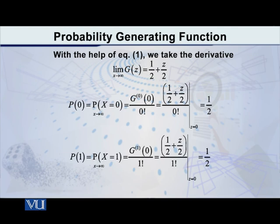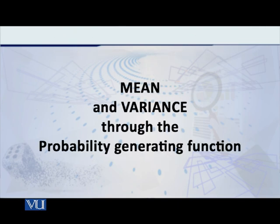Once again, you have seen that the probability of X equal to 1, which should be 1/2, comes out to be 1/2. This is a simple example to illustrate how you can generate probabilities from the probability generating function. After this, I would also like to tell you how to find the mean and the variance through the probability generating function.